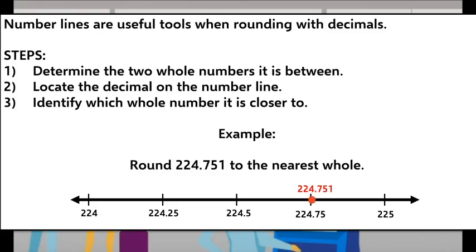There, we have our number line. It looks like our number is closer to 225 than it is to 224, so 224 and 751 thousandths must round to 225.